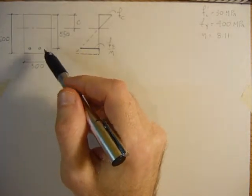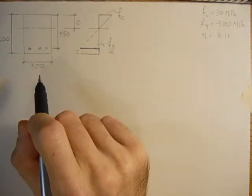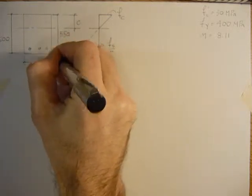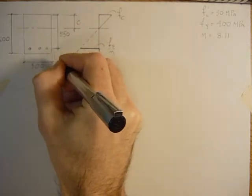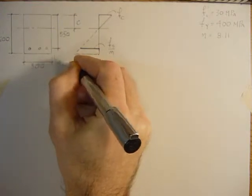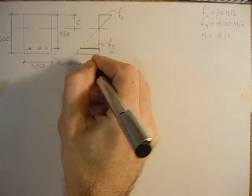We have the same section from tutorial 1: 300 by 600 with 3-15mm bars. So the area of steel is 600 millimeters squared.